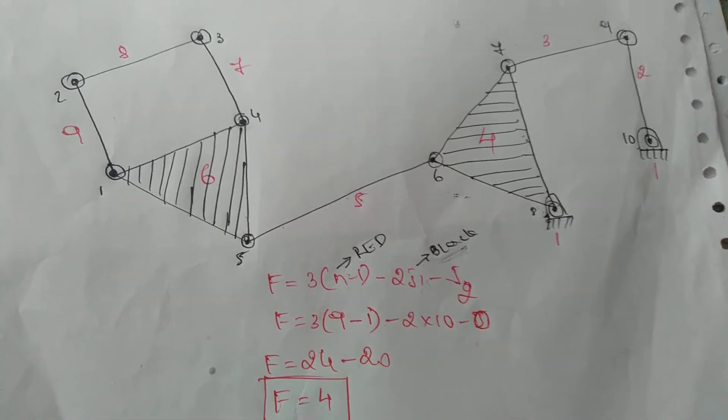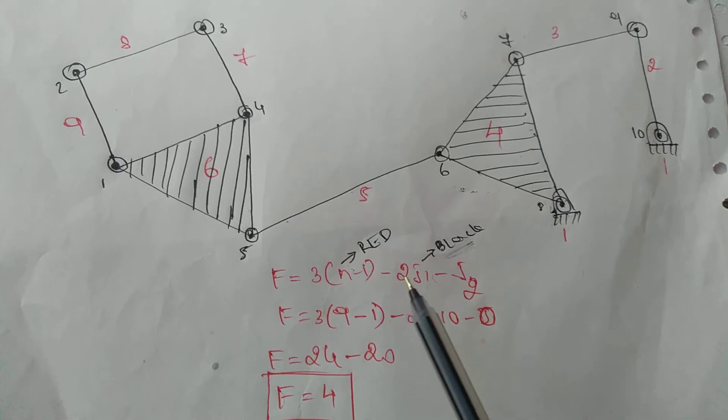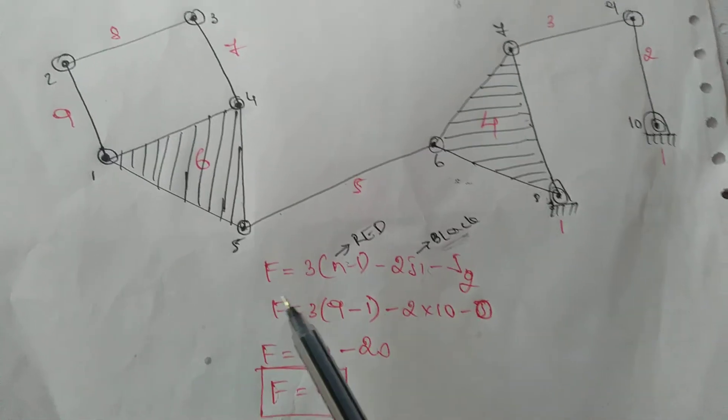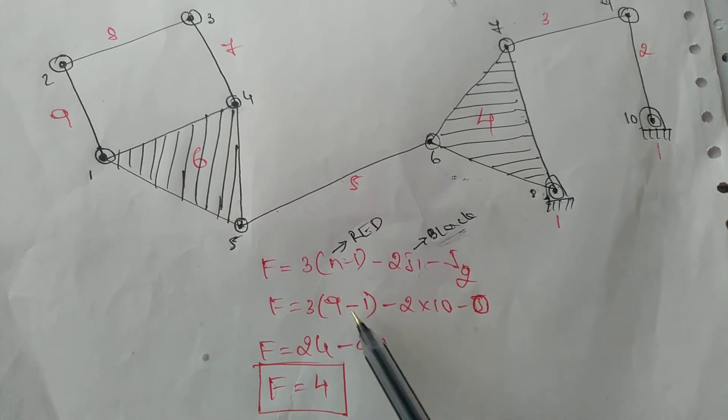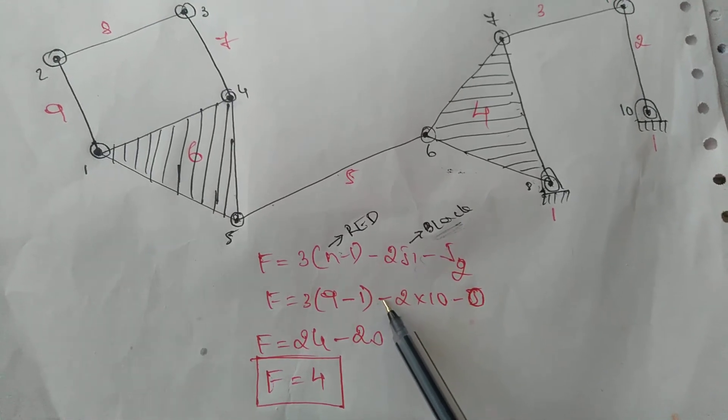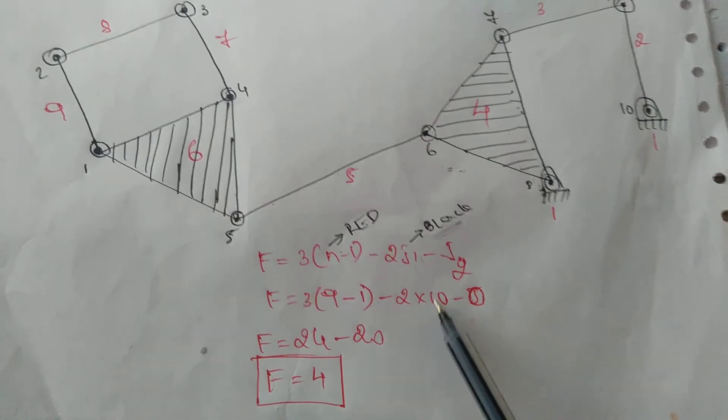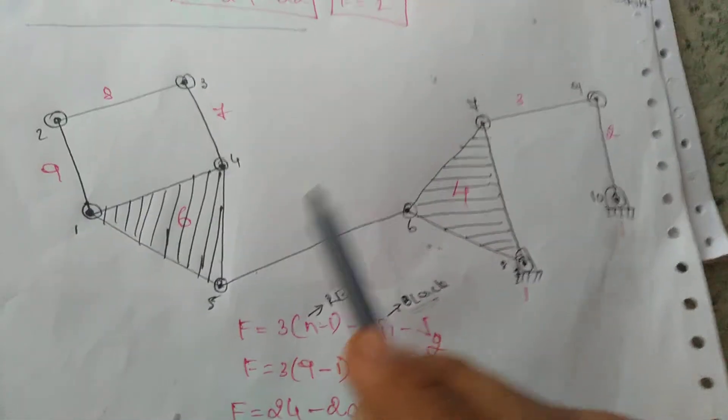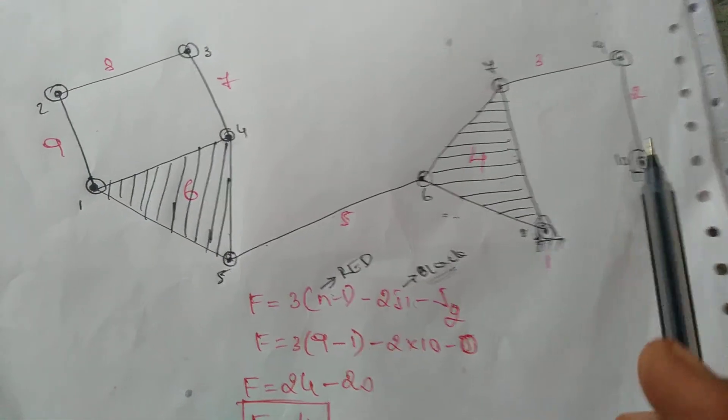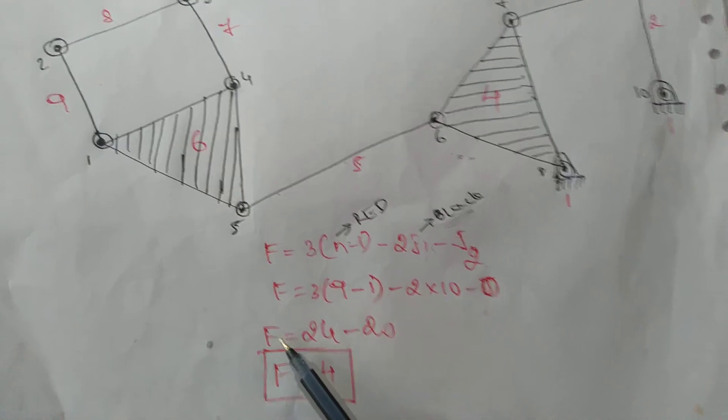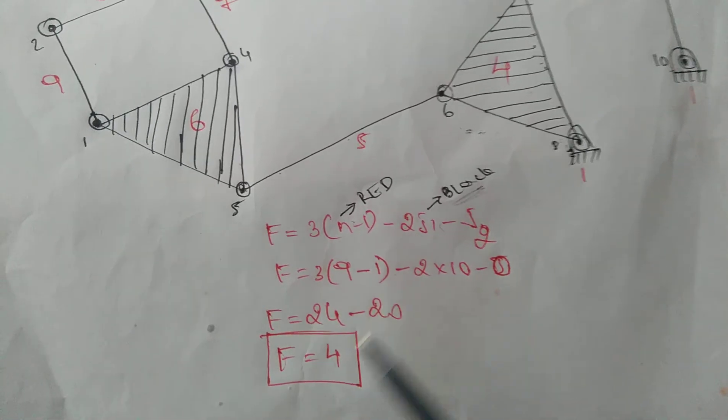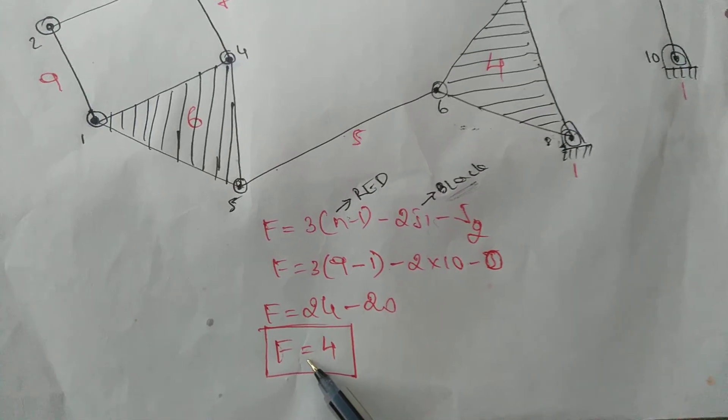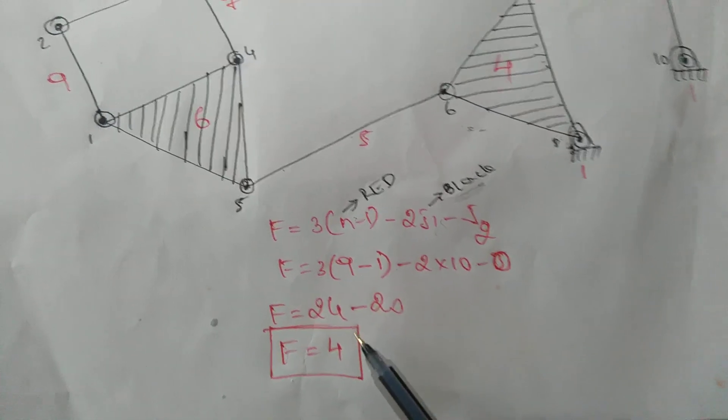Now we'll substitute everything. F, degrees of freedom, equals 3(9-1) minus 2(10) minus 0, because there is no two degrees of freedom. Finally, we get 24 minus 20, so the final degree of freedom is 4.